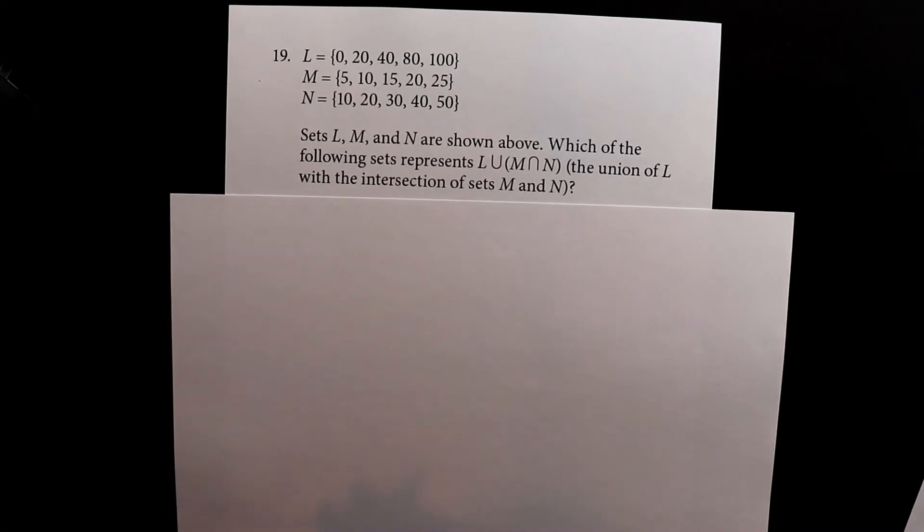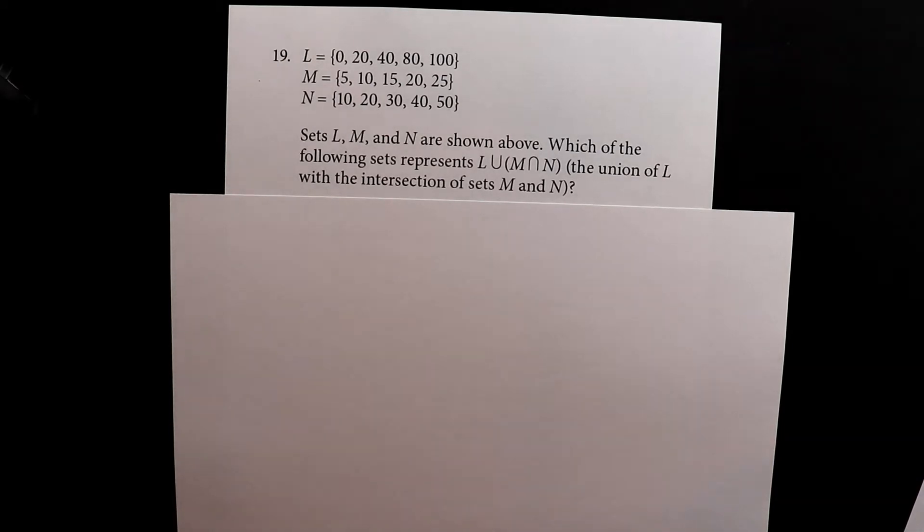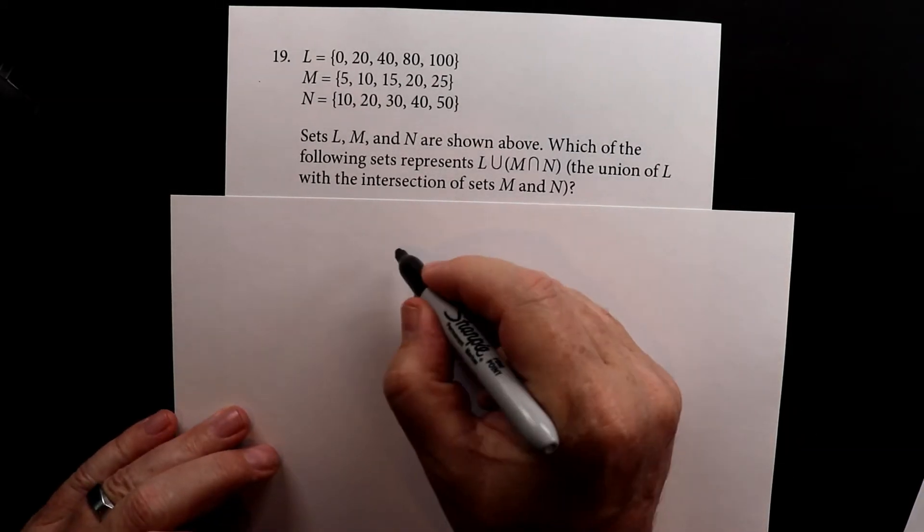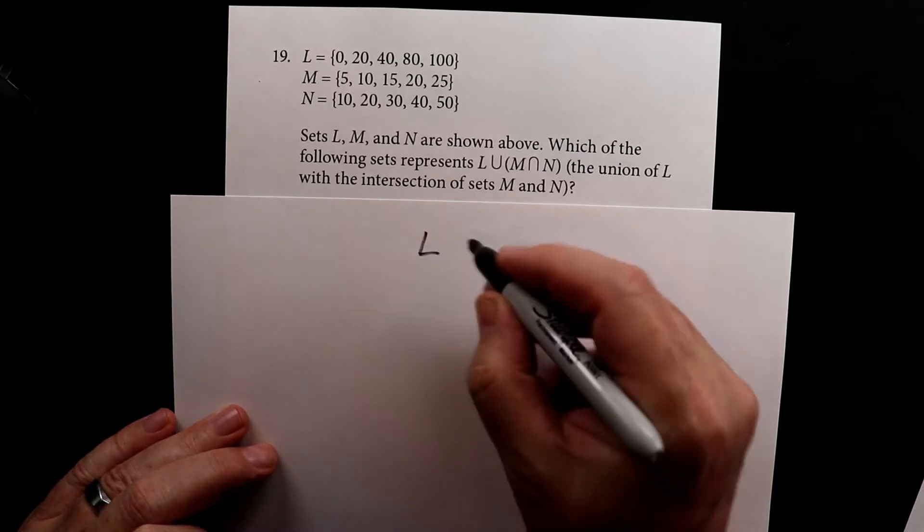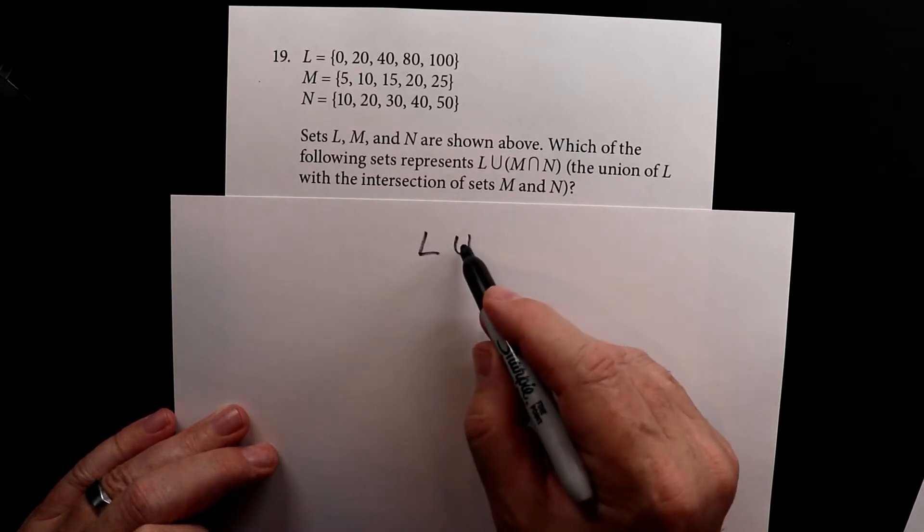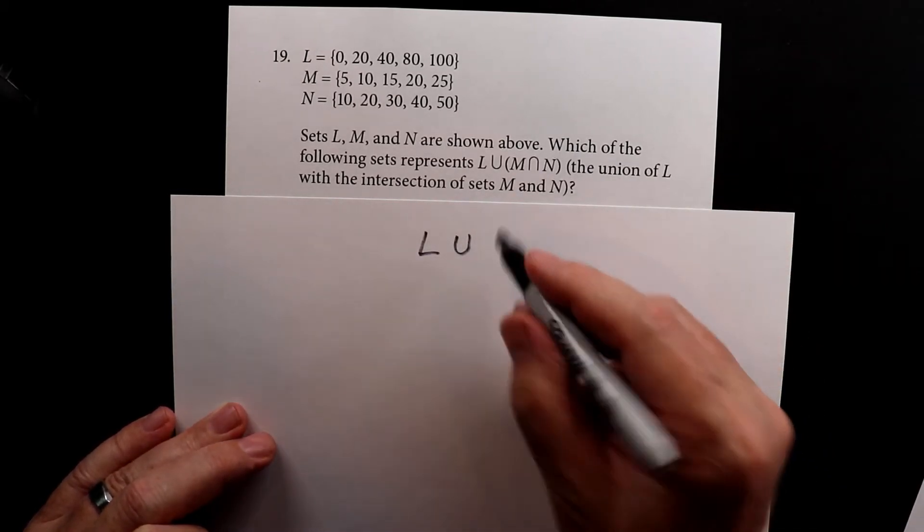So let's write this out and then figure out how to take all of this apart. So we have L union. The U stands for union, which is when you put things together.